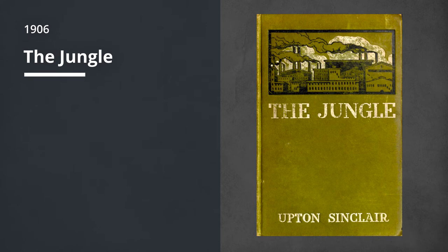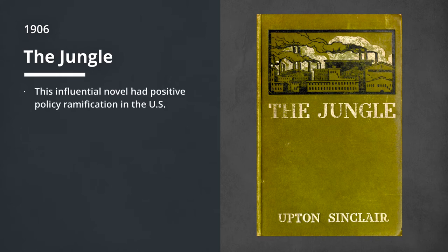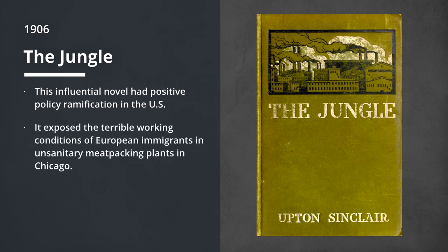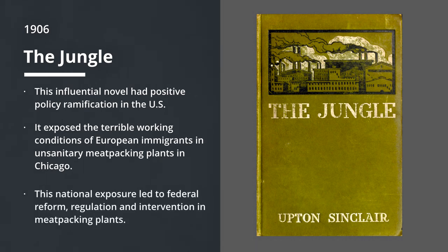Another influential person during this time period in 1906 was Upton Sinclair. He was an influential progressive who wrote a novel called The Jungle that had positive ramifications in public policy in the United States. This book exposed the terrible working conditions of European immigrants in unsanitary meatpacking plants in Chicago. Because of the uproar it created and the national exposure, this led to federal reform, regulation, and intervention in meatpacking plants.